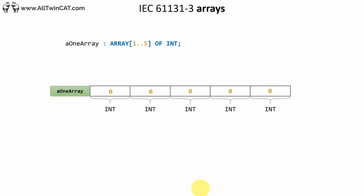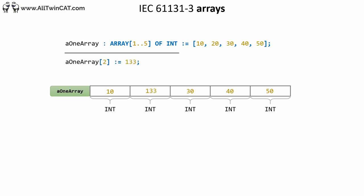Now we'll briefly touch on the topic of arrays. An array is a series of elements of the same type placed in contiguous memory locations that can be individually referenced by adding an index to a unique identifier. You declare an array in a specific way. In this example we have created an array that stores five integers. All values in the array are initialized with zero — just as any integer where we haven't assigned a value. We can also initialize the array with specific values in the declaration.